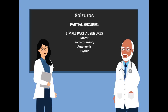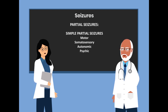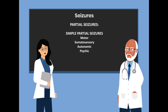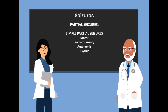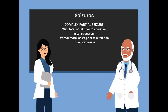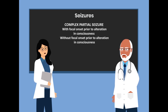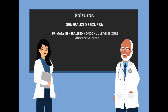With partial seizures, you have simple partial seizures and complex partial seizures. Simple partial seizures may present with motor, somatosensory, autonomic, and psychic components. Complex partial seizures may present with focal onset prior to alteration in consciousness, or it may present without focal onset prior to alteration in consciousness.